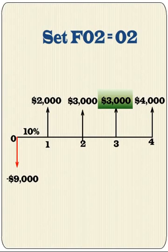Since the $3,000 cash flow occurs twice in a row, we are going to take a shortcut and set the frequency equals 2. We can only take this shortcut when cash flows in the same amount occur consecutively.